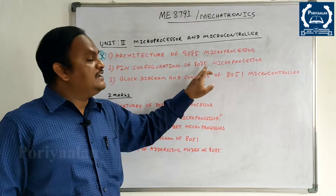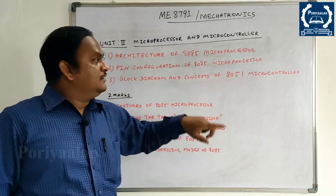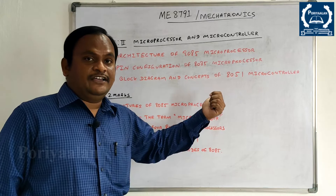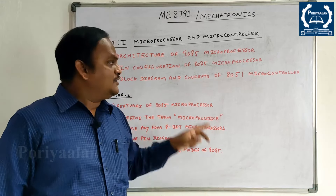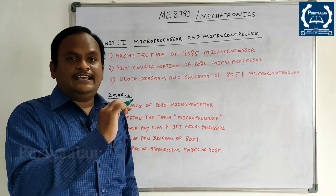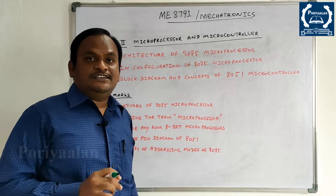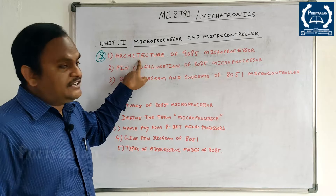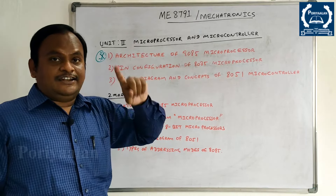The second question is the pin configuration of 8085 microprocessor. This is the pin configuration diagram — in the box, there are various pins on the left and right, including pins for VCC. The architecture of 8085 microprocessor and pin configuration of 8085 microprocessor are both 8085, so it can be a bit confusing.